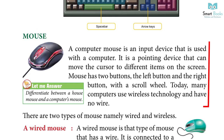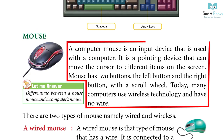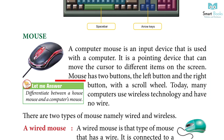Mouse: A computer mouse is an input device used with a computer. It is a pointing device that can move the cursor to different items on the screen. A mouse has two buttons — the left button and the right button — with a scroll wheel. Today, many computers use wireless technology and have no wire.